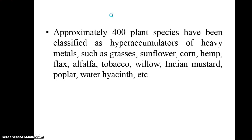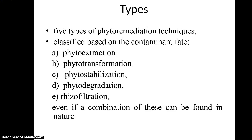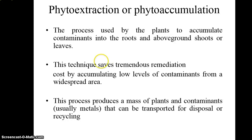Now let's look at what kinds of plants can be used for phytoremediation. These include different grasses, sunflower, corn, Indian mustard, water hyacinth, and tobacco. One common example is 'alu,' which is cultivated in water released from bathrooms, effectively acting as a phytoremediator.